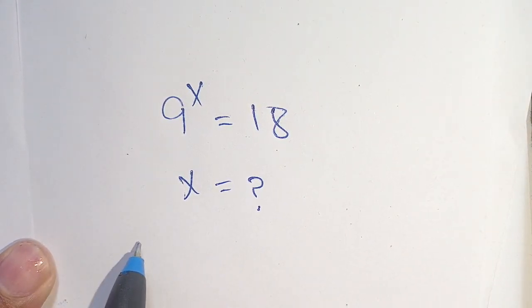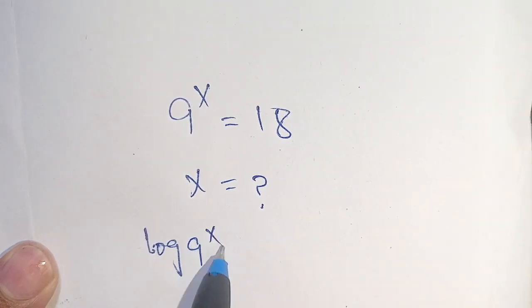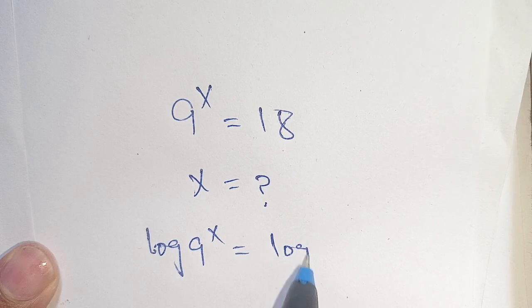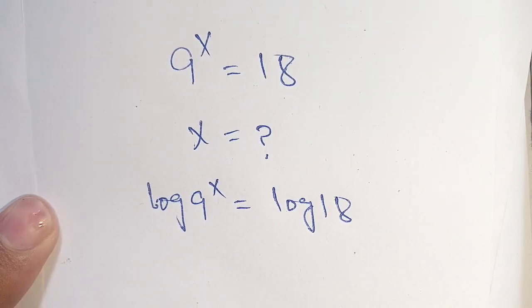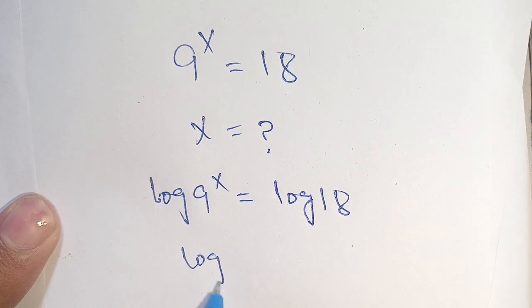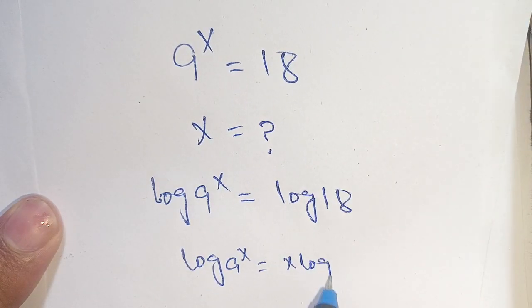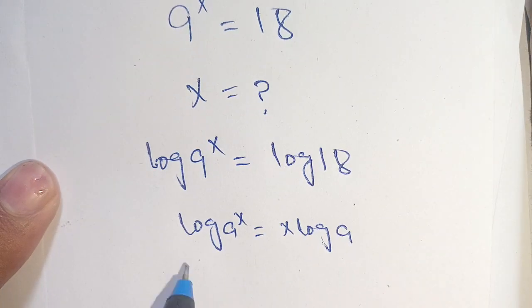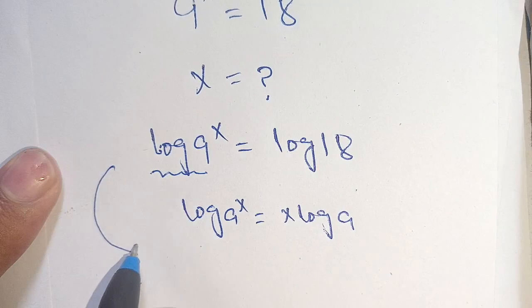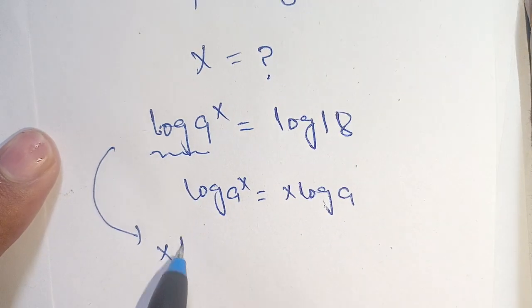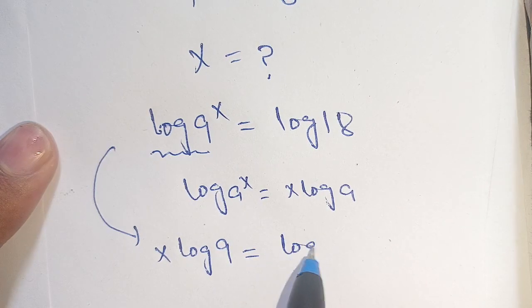Taking log on both sides, we get log of 9 to the power x is equal to log of 18. We know that log of a to the power x is equal to x times log of a. Using this identity on the left-hand side, we get x times log of 9 is equal to log of 18.